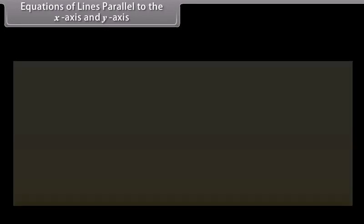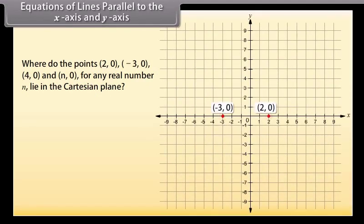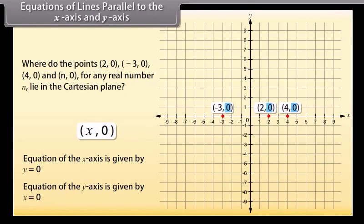Where do the points (2, 0), (minus 3, 0), (4, 0), and (n, 0) for any real number n lie in the Cartesian plane? They all lie on the x-axis, because on the x-axis the y-coordinate of each point is zero. Every point on the x-axis is of the form (x, 0). So the equation of the x-axis is y equals 0. Similarly, the equation of the y-axis is x equals 0.